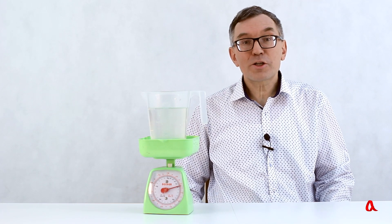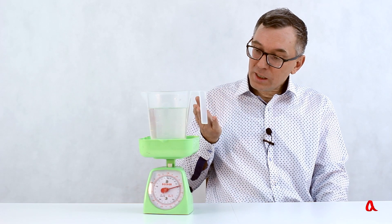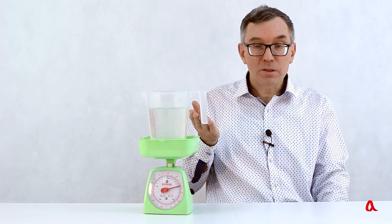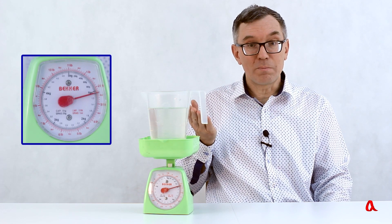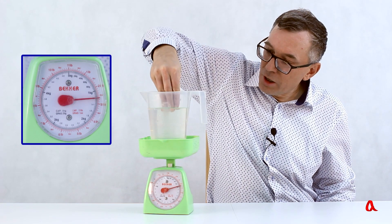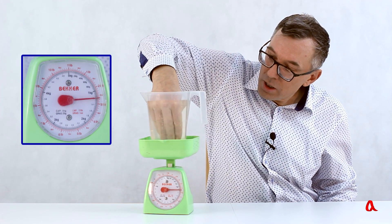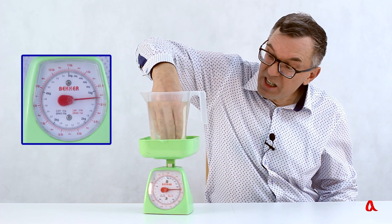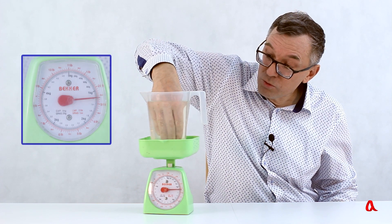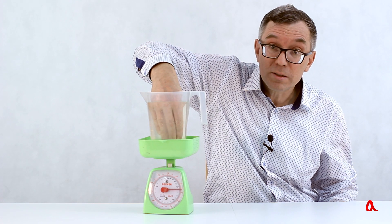And now I'd like to ask you a question. You can see a beaker with water. The scales show us that its weight is 1 kg. I put my hand inside the beaker and the scales show us a bigger figure. But I am touching neither the walls nor the bottom of the beaker. How can this be explained?